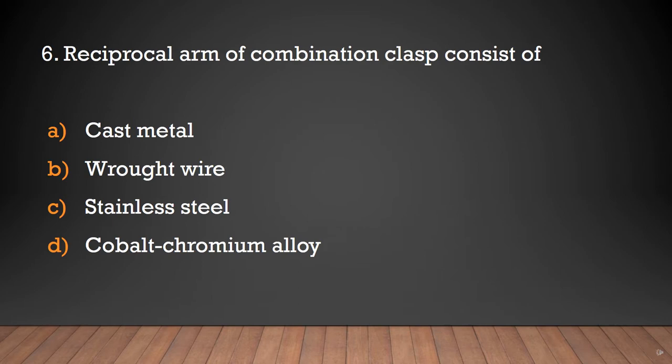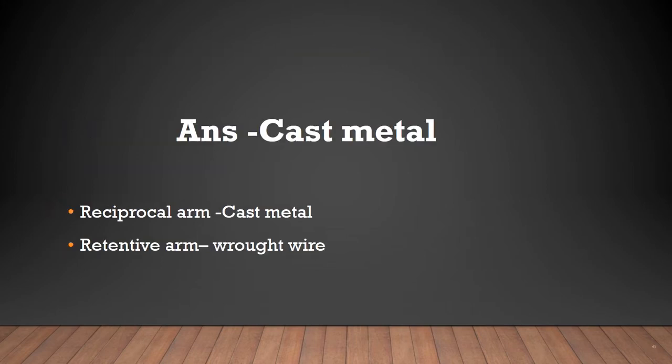The reciprocal arm of combination clasp consists of: cast metal, wrought wire, stainless steel, or cobalt chromium alloy? The answer is cast metal — the reciprocal arm of combination clasp consists of cast metal, and the retentive arm consists of wrought wire.